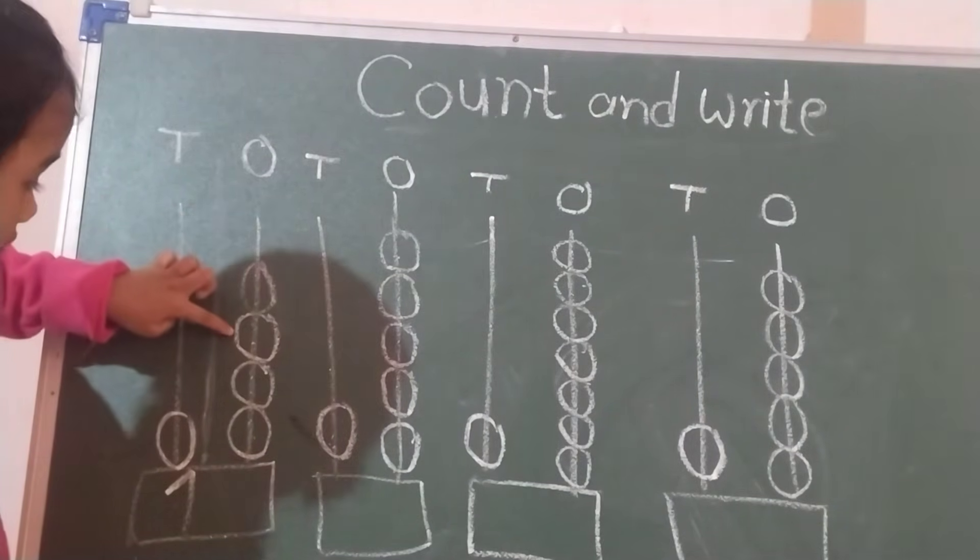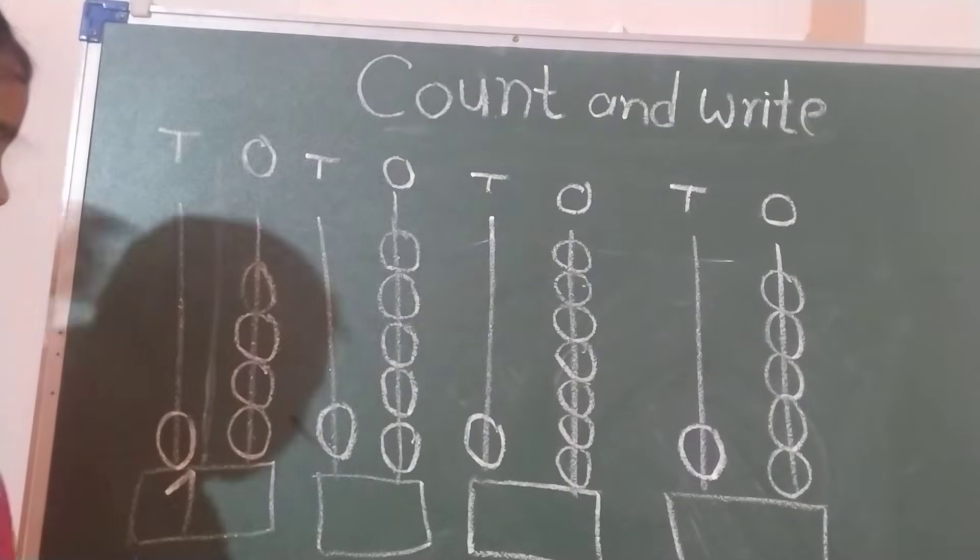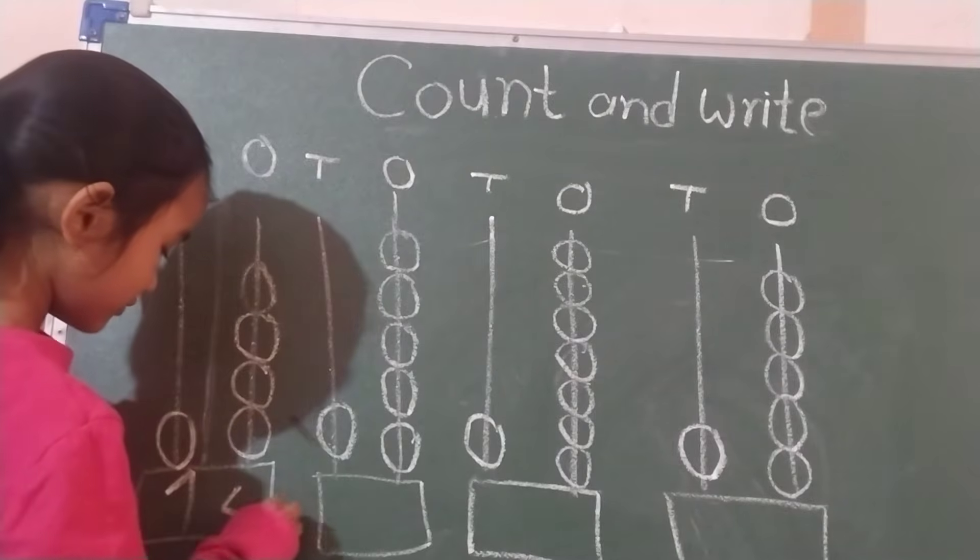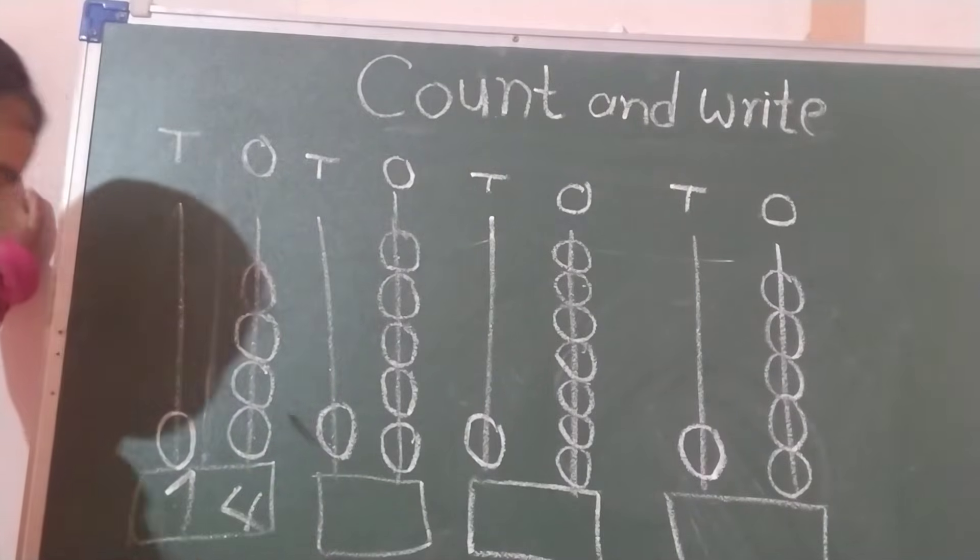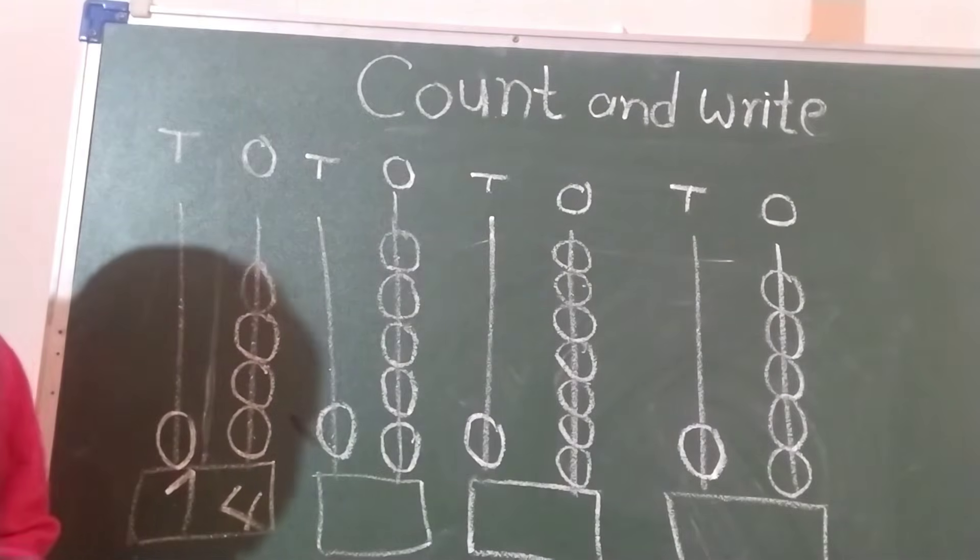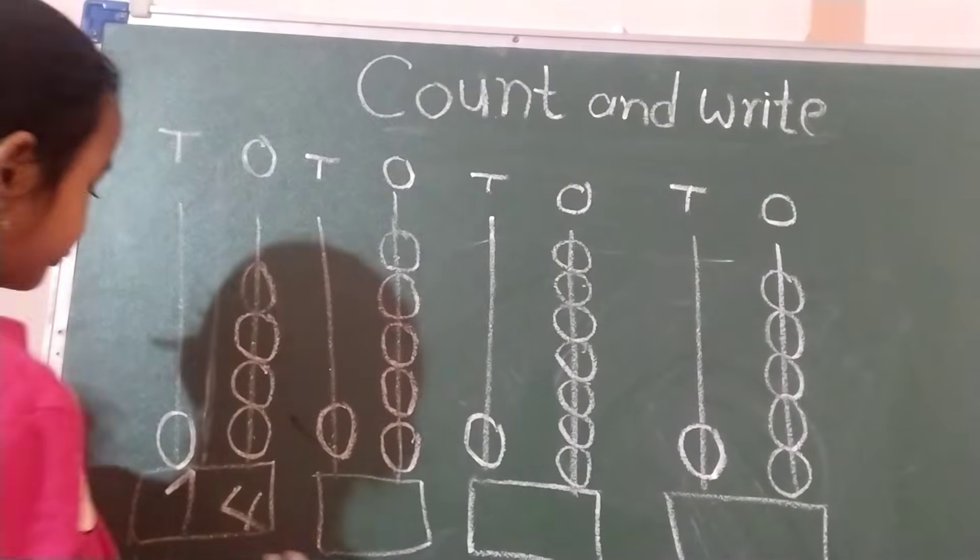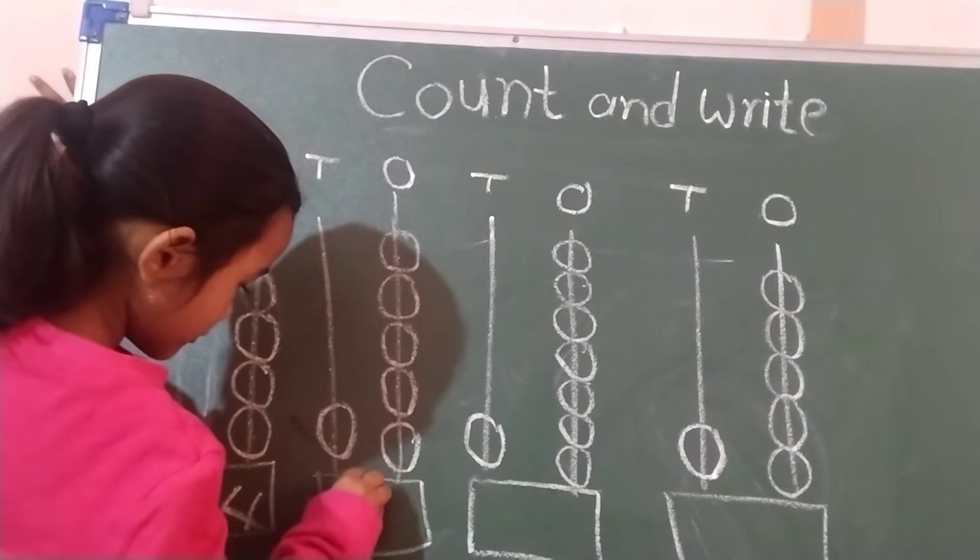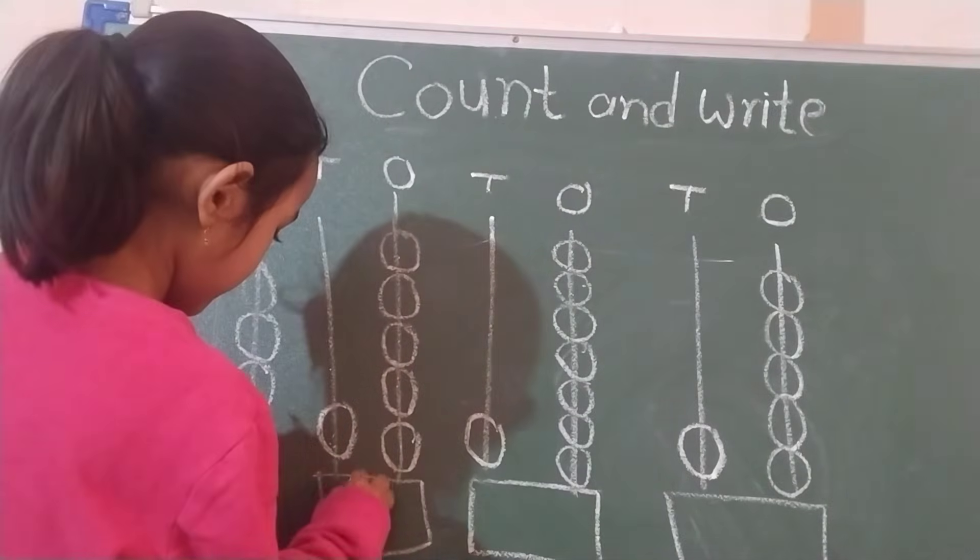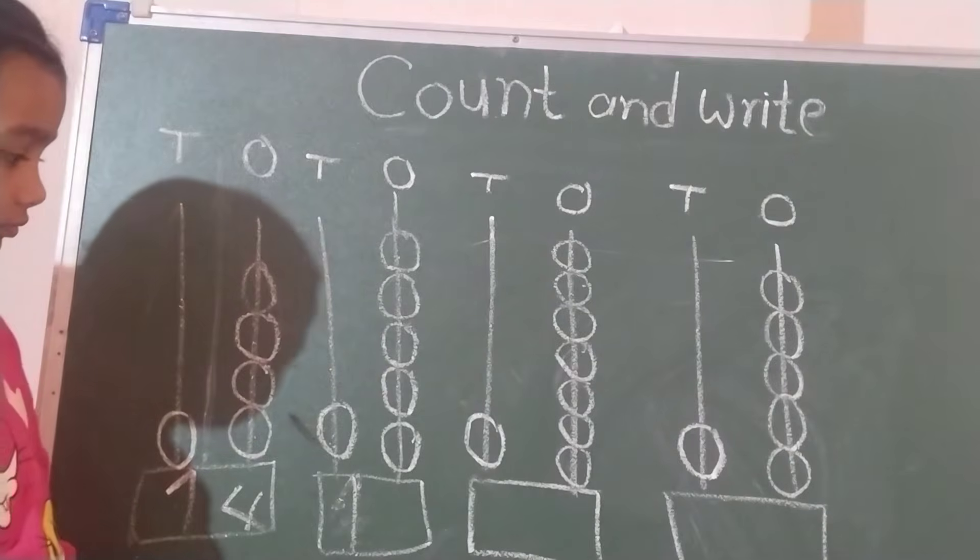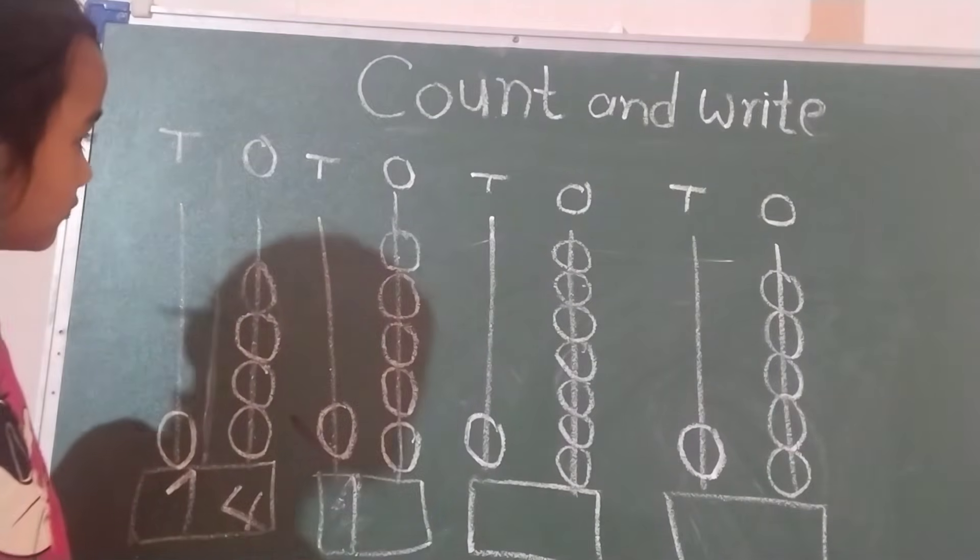One, two, three, four. Write down. Then which number is? Four. Fourteen. Then next number is? Four. One. Then ten plus value, put the one plus value.